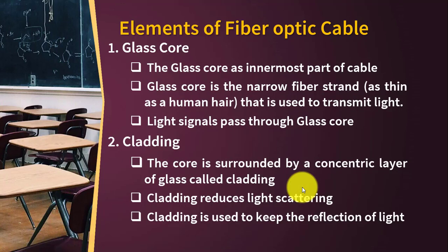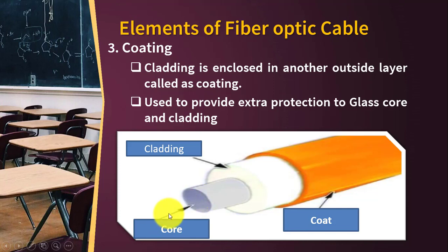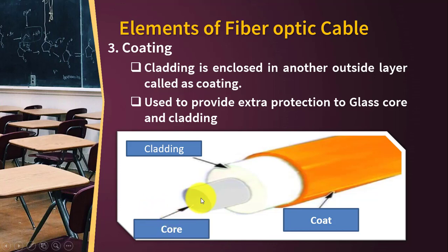The first one is the glass core. The glass core is the innermost part of a cable. It is a very narrow fiber strand, as thin as hair, that is used to transmit light. You can see here this is the innermost part of the wire, where the signals in the form of light will enter from this side.